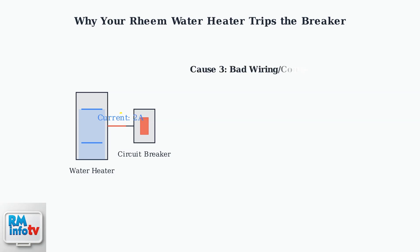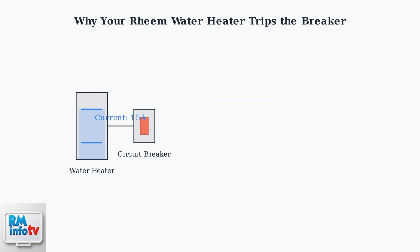Damaged wiring, loose connections, or pest damage can create electrical faults. These issues cause irregular current flow and can make the breaker trip unexpectedly.